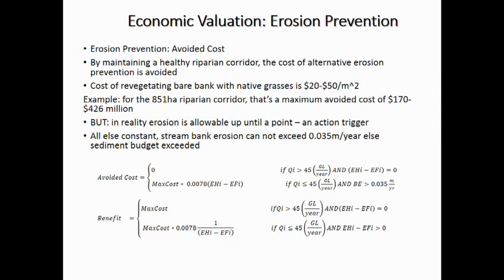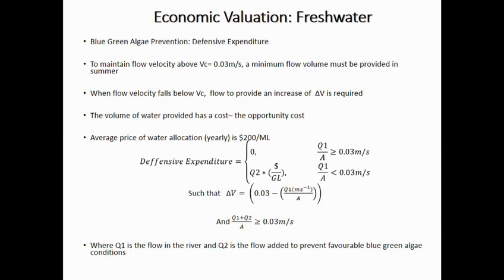We know that if there were no trees, we would have to intervene to maintain the same low level of erosion. It could be re-vegetation, riprap, or fencing — and that all comes at a cost. So when these trees are healthy and keeping our banks together, we avoid that cost. Similarly for freshwater: if water is provided to ensure that minimum flow velocity is met, that water comes at a cost — it has an opportunity cost based on the price traded on the market.